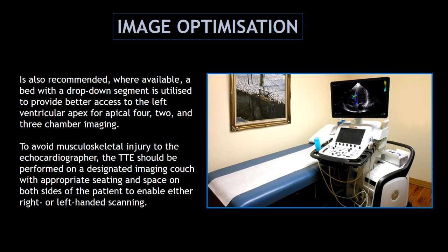It's important to have good facilities to ensure patient privacy and to allow the patient to be positioned in the left lateral decubitus position. It's recommended to have a specialized couch for scanning — a couch with a drop-down segment that provides better access to the apex. The echocardiogram should be performed on a special couch, in an appropriate setting and space, and with a special scanning chair.